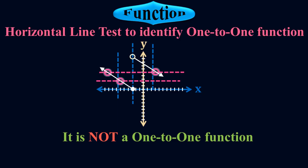Just to be clear, it is not necessary to pass only two horizontal lines — you can pass three, four, or five. But if even a single horizontal line touches the graph on more than one point, it is still not a one-to-one function. I have no issue with this line because it only touches the graph here, but this line touches the graph at this point and then at this point. Similarly, there may be another line that touches the graph twice.